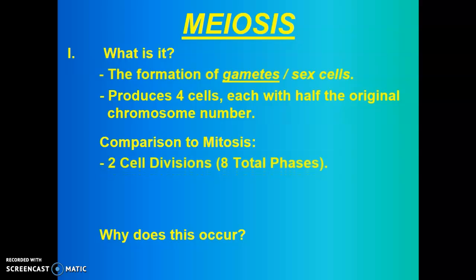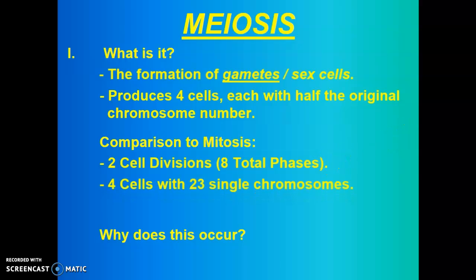If we do a quick comparison of that to mitosis, we're going to see two cell division stages, or a total of eight phases in meiosis as opposed to mitosis. In mitosis we just had PMAT — prophase, metaphase, anaphase, telophase. For meiosis we're going to do it twice, so we're going to have PMAT1 followed by PMAT2. We will be making four cells with 23 single chromosomes, and each one of these cells is going to be completely different than one another.